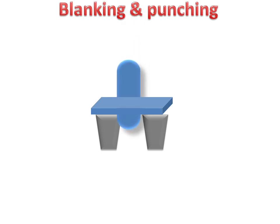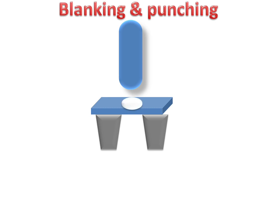The tool will punch the plate and a part of the plate will be cut out. This is the part of the plate which will be cut out when the tool punches the plate, and the cut part of the plate will go down.